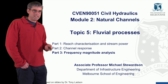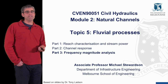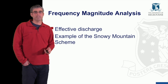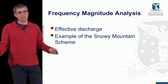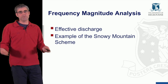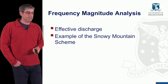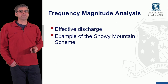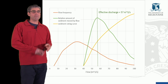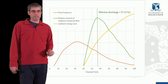This is the third video in the second topic, Topic 5 for Fluvial Processes. In this video we'll talk about frequency and magnitude analysis. We'll start by talking about effective discharge and then we'll apply this analysis method to an example of the Snowy Mountain Scheme in Victoria, New South Wales.